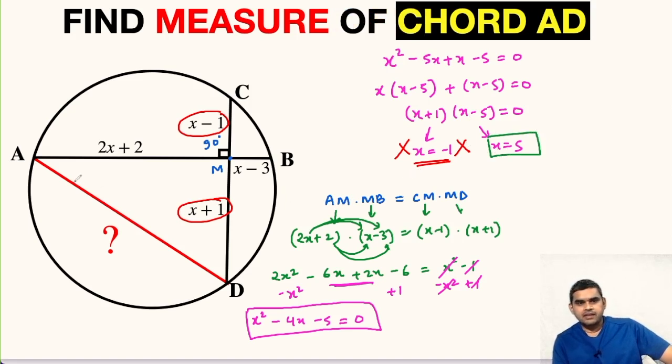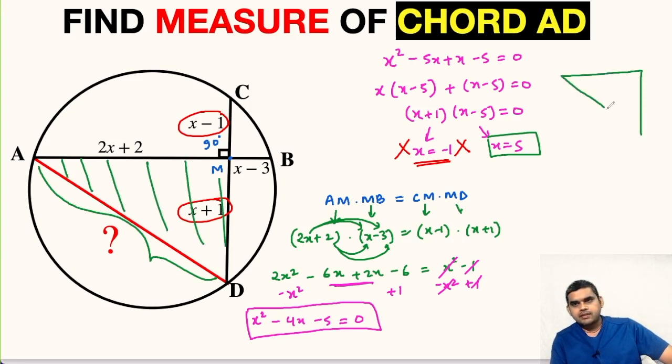Now our main aim was to find the length of this chord AD. So now let us focus on this triangle AMD. Let me draw it outside separately. So this point is A, this is D, this point is M, and this angle is 90 degrees.